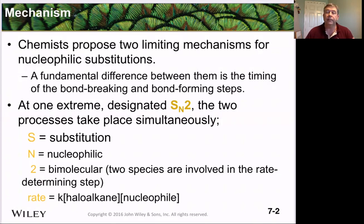We have a couple different ways in which we can do these mechanisms, and we're going to put them into two extremes. The first extreme is called the SN2 reaction, which is a substitution that involves a nucleophile, and it's bimolecular, meaning that two molecules are in its transition state.